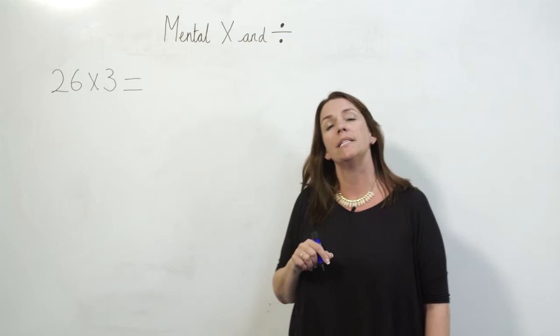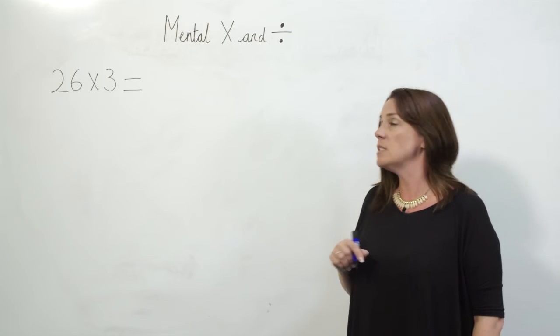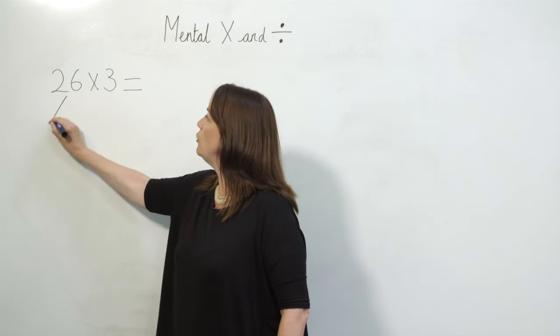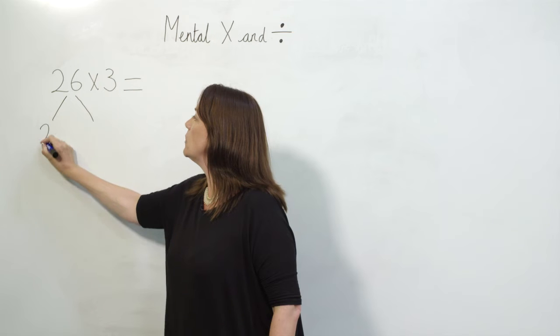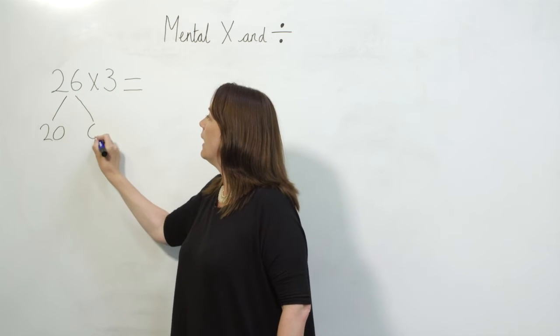So here I have a calculation: 26 times 3, and I can split my 26 into two parts, which would give me 20 and 6.